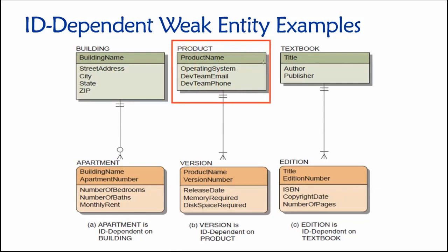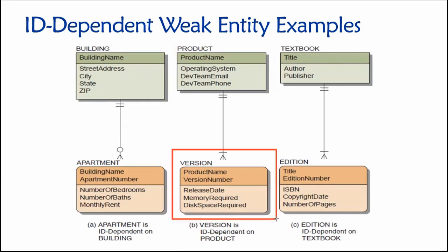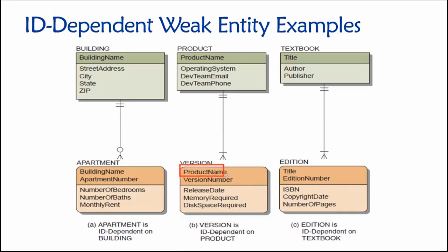The same concept applies to the product table. Products can exist on their own as strong entities, but versions of a product — like Windows 11, Windows 10, or Office 365 — are weak entities. It's not possible to add records for a new version of a software program unless that software product already exists in the product table. Similarly, textbooks have editions, so the textbook is a strong entity and its editions are weak entities, recording things like page count and copyright date.